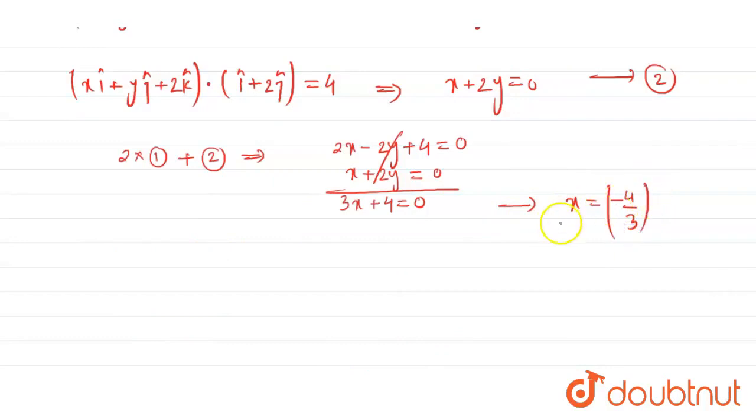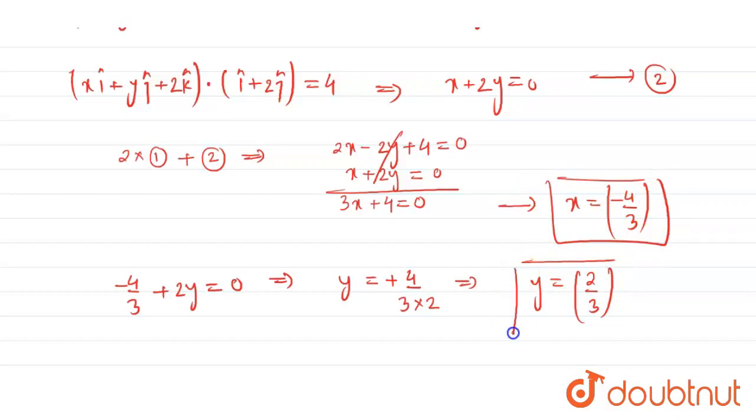So अब हम इस x की value को equation 2 में put कर देते हैं. So यहां से हमें मिला minus 4 by 3 plus 2y equals to 4. So y is equals to plus 4 by 3 divided by 2 which is equals to y equals to 2 by 3. So this is our final answer, where x equals to minus 4 by 3 and y equals to 2 by 3.